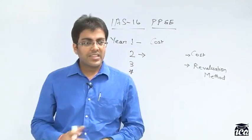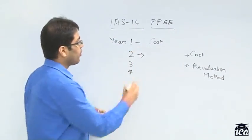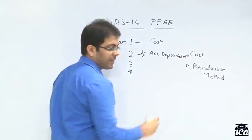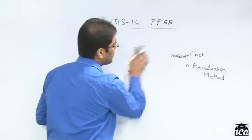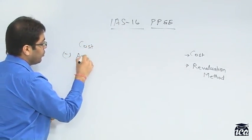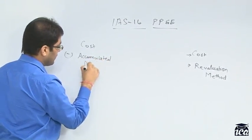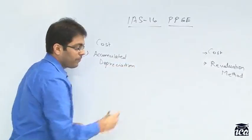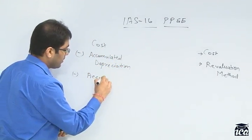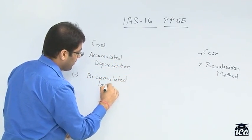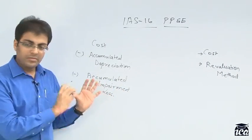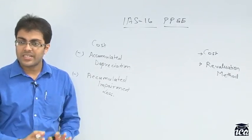Under the cost method, there is no change. The fixed asset will be measured at cost less accumulated depreciation. We also know that there is something called impairment, so in case there is an impairment loss, that is also decreased. We will deal with this later as it is beyond scope right now, but this is essentially the same as we understand in the Indian context.